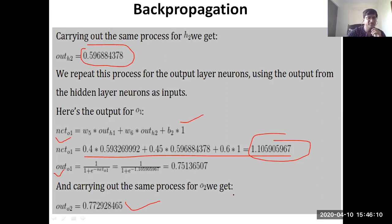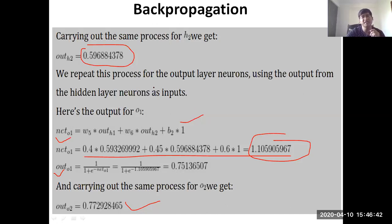After the forward phase, we have calculated the output of both output neurons. We were also given target values, and the second part of the algorithm says we need to calculate the error with respect to the calculated outputs and the given targets. Once we calculate the error, those errors are back-propagated in the backward fashion to update each weight — first between hidden and output, then between input and hidden.